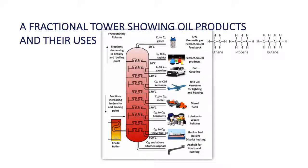Let's have a look at a fractional tower showing the oil products and their uses. So we have our smaller carbons. They are used as our gases, our smaller hydrocarbons and they are slowly increasing in size and we have our big fat heavy hydrocarbons used for the big heavy duty stuff.